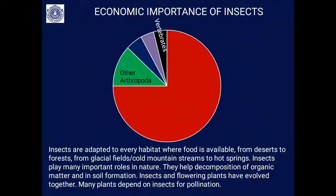Insects help in decomposition — just imagine what happens when there are no decomposers and dead organisms are not decomposed. Insects contribute the major part of organic matter decomposition and soil formation. Insects and flowering plants have co-evolved: angiosperms have evolved because of insects, so there is a co-evolution, and many plants depend on insects for pollination.